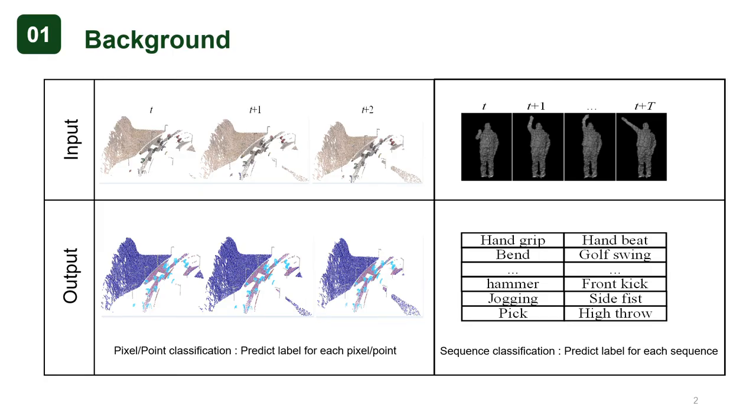Given an input of point cloud sequence, 4D semantic segmentation is a point level classification task, while 3D action recognition is a sequence level classification task.